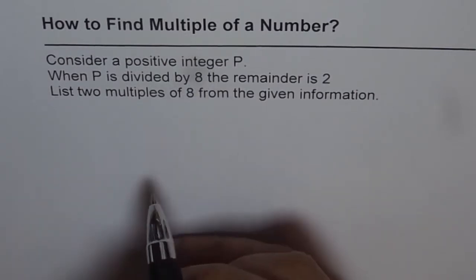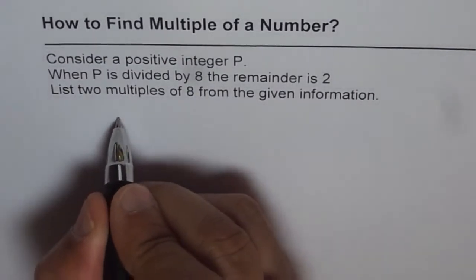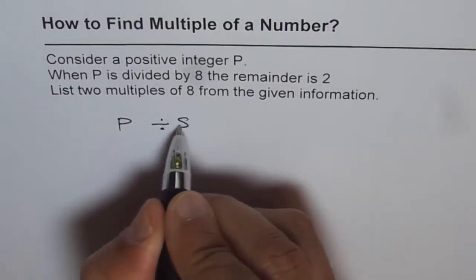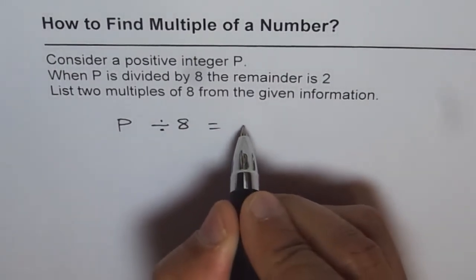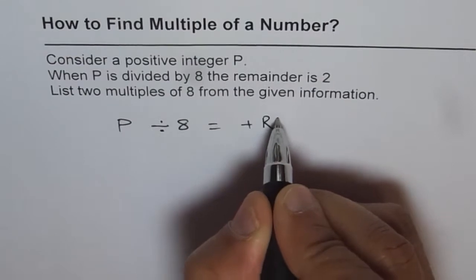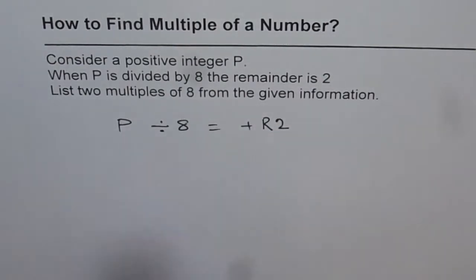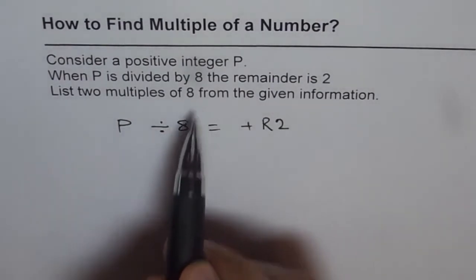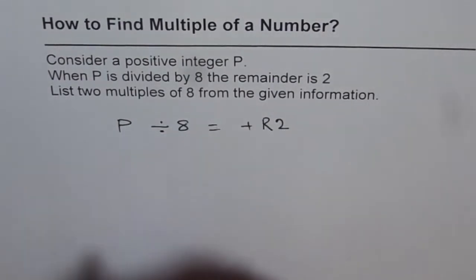What we are given here is that p is a positive integer, and when you divide this by 8, you get something plus a remainder, which is 2. And what we need to find? We need to find two multiples of 8 from this given information.